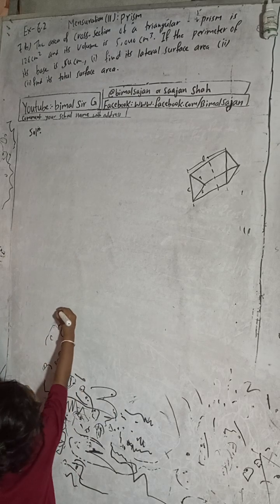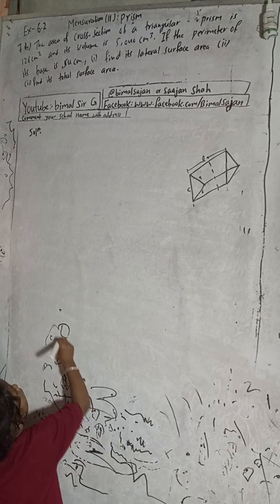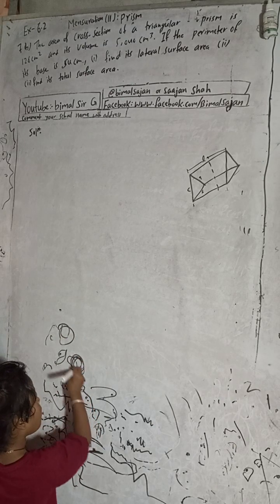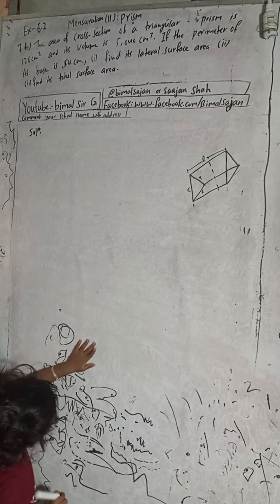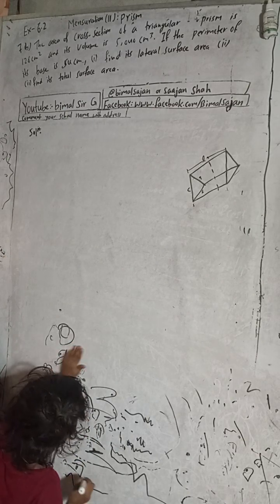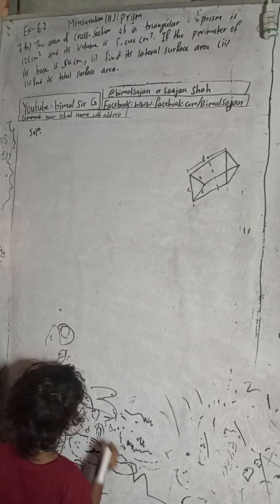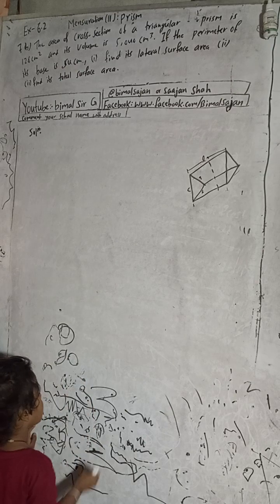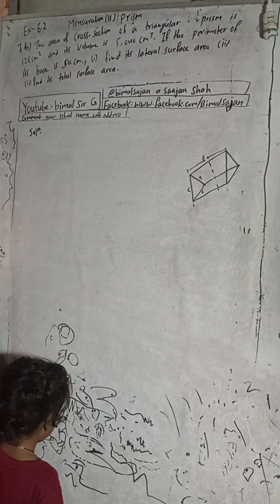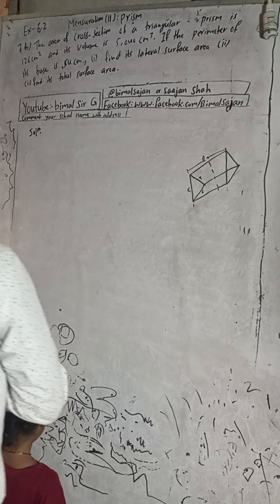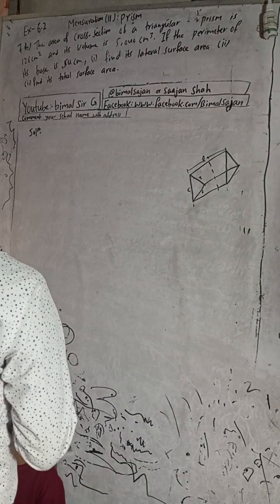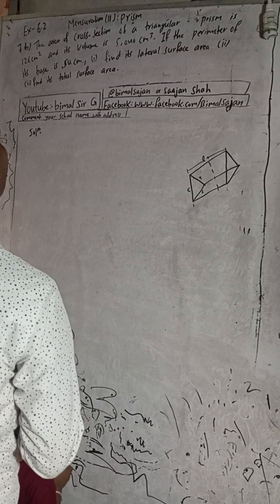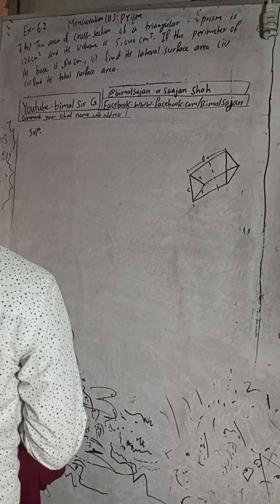Don't forget to like and comment. The area of cross-section of the triangular prism is 126 cm² and its volume is 5040 cm³. If the perimeter of its base is 54 cm, find its lateral surface area and find its total surface area.